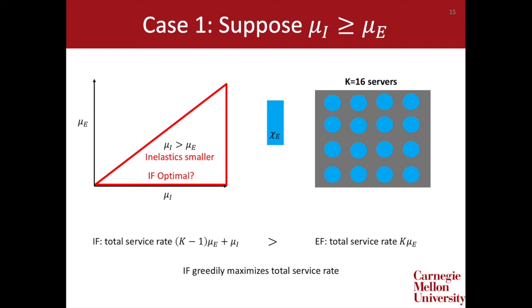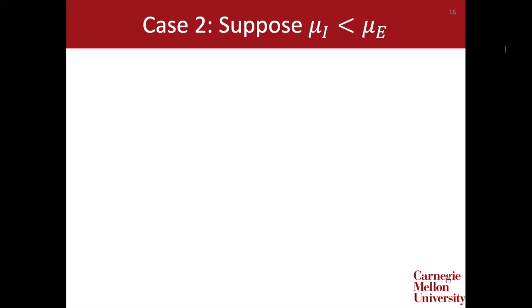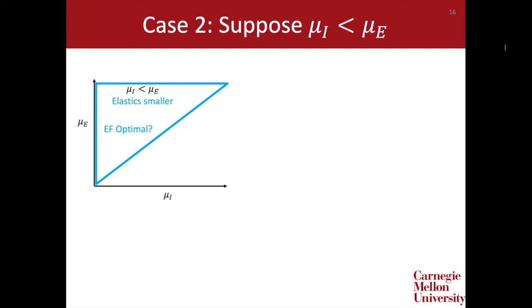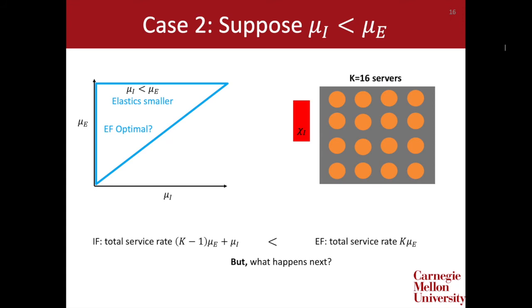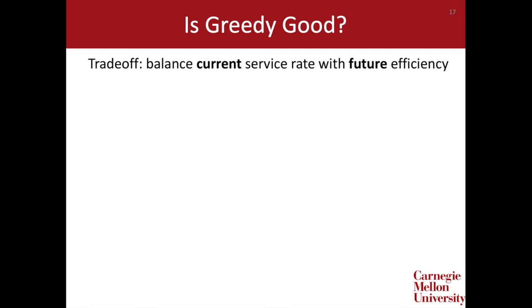Now consider the second case where mu_i < mu_e, so elastic jobs are smaller on average, and we consider the EF policy. With a small elastic job and a large inelastic job, EF allocates all 16 servers to the elastic job — again greedily maximizing total service rate. However, when the elastic job departs, we can only allocate one server to the remaining inelastic job. The system becomes very inefficient once the elastic job is gone, leaving many idle servers. So while there's a benefit to completing a smaller job first, this may be outweighed by a long period of low efficiency.